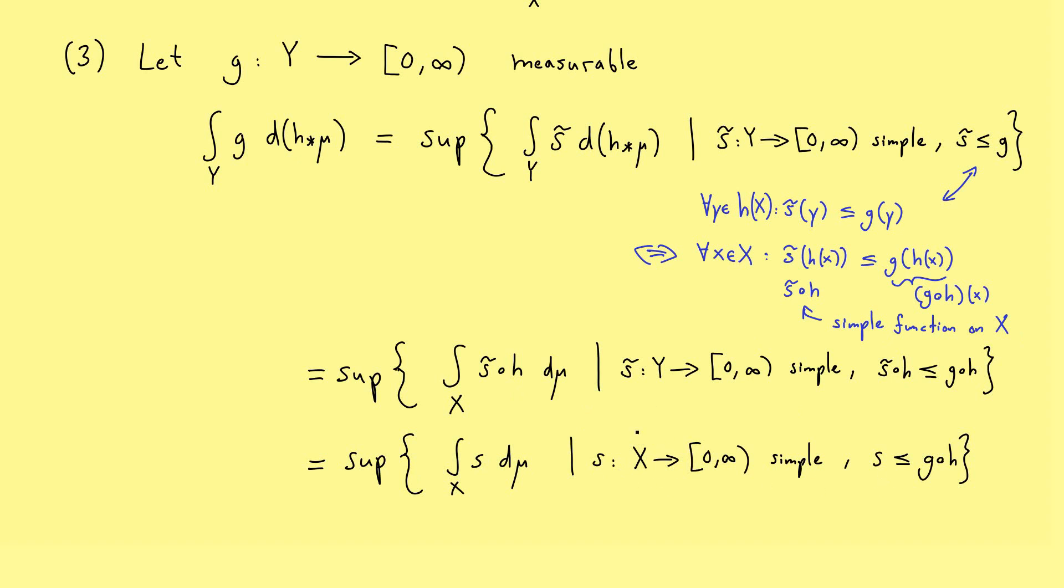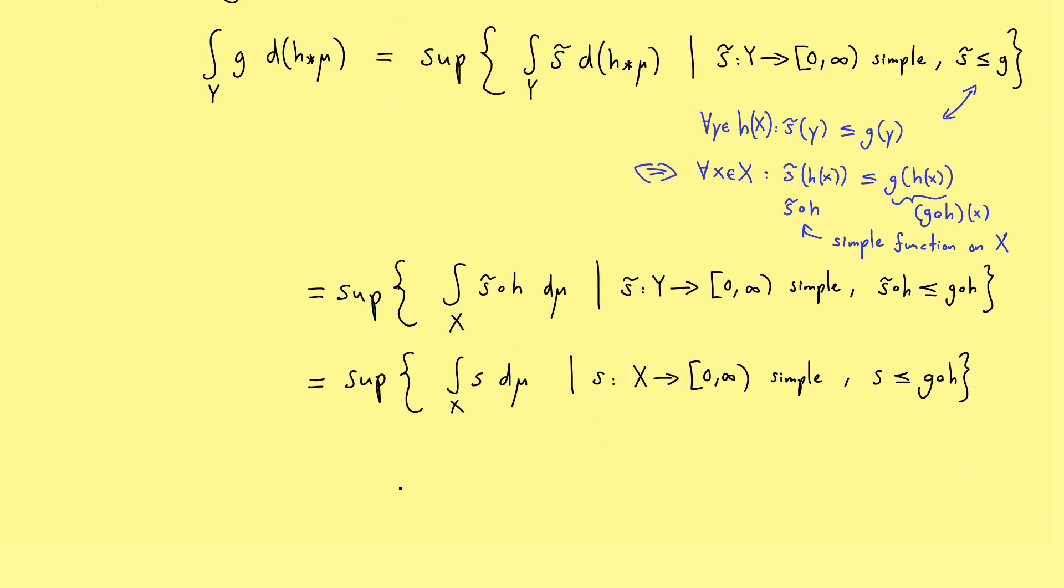You see, this looks shorter and is easier because now we look at simple functions on the set X. However, please note that we now look at all the simple functions on X, not just the ones that look like this composition here. However, we don't change the supremum by adding the simple functions that are not given by this composition here. This is not hard to show, but I will skip this here now.